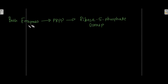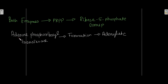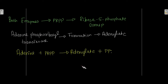Both APRT and HGPRT utilize PRPP as the source of the ribose-5-phosphate group, which they obtain from PRPP. The enzyme adenine phosphoribosyltransferase catalyzes the formation of adenylate. The reaction looks like: adenine plus PRPP gives adenylate and pyrophosphate (PPi), and this reaction is catalyzed by adenine phosphoribosyltransferase.